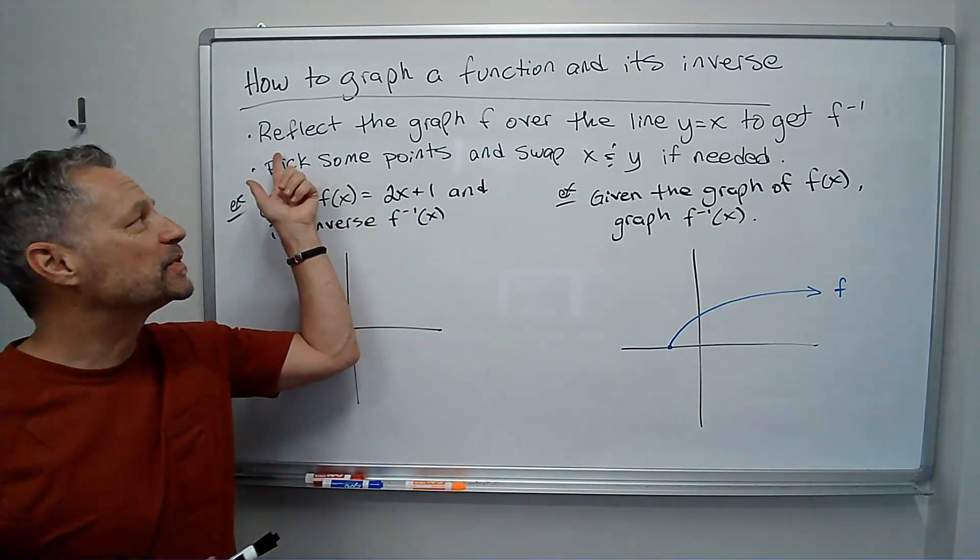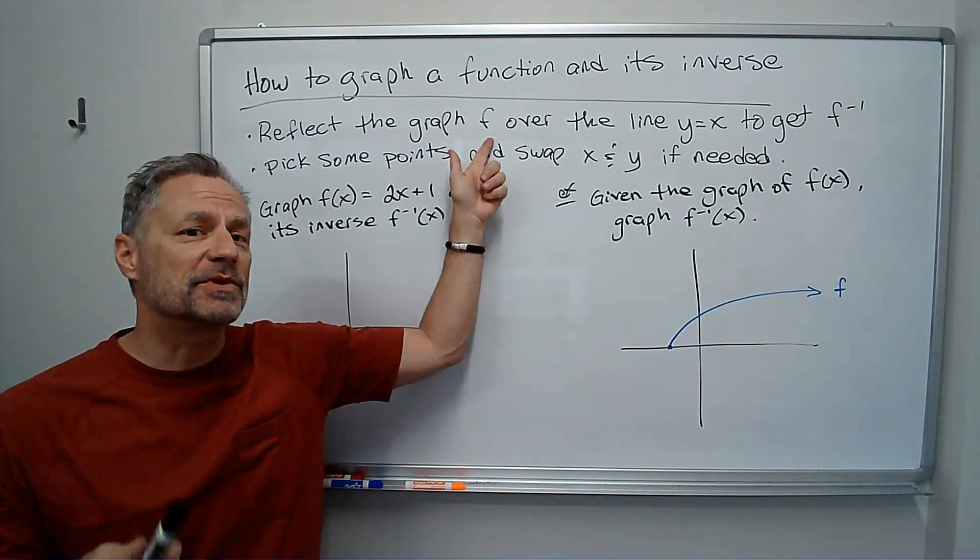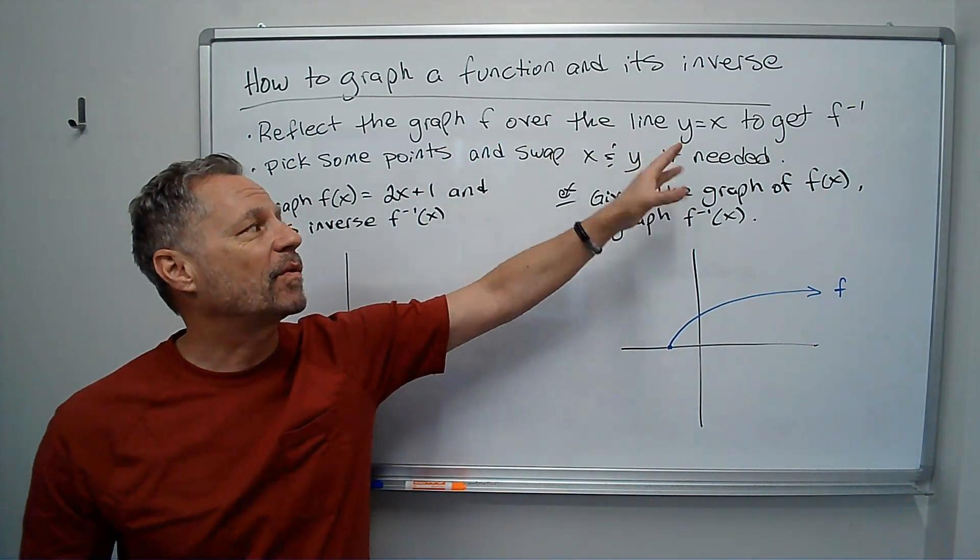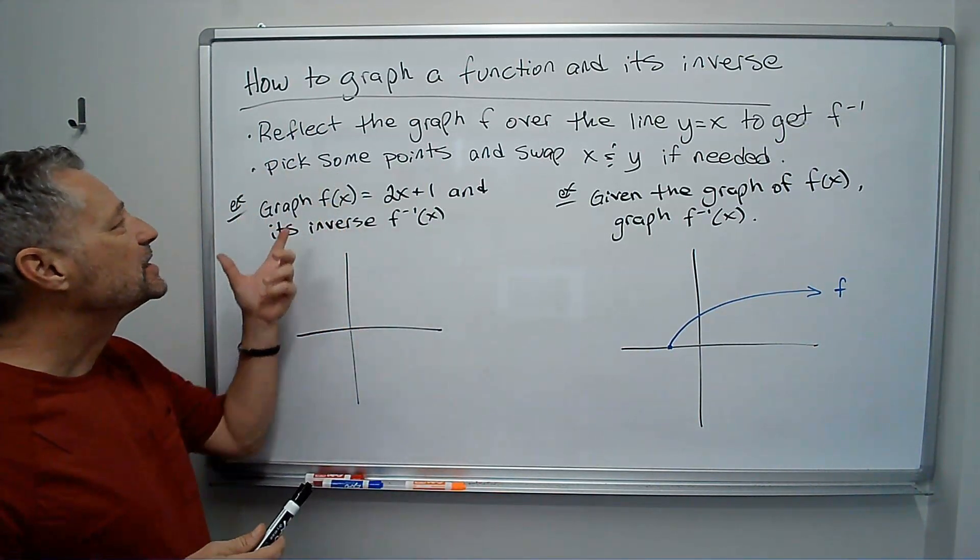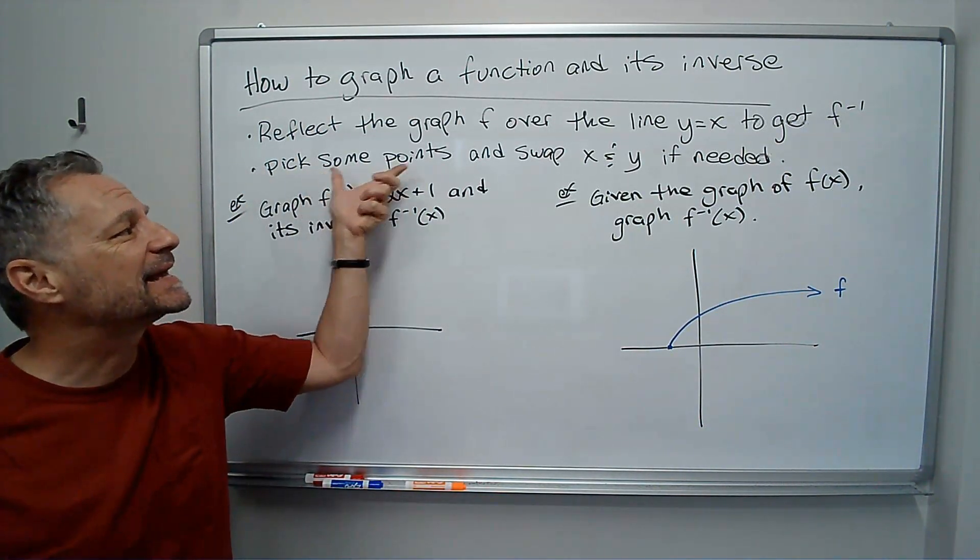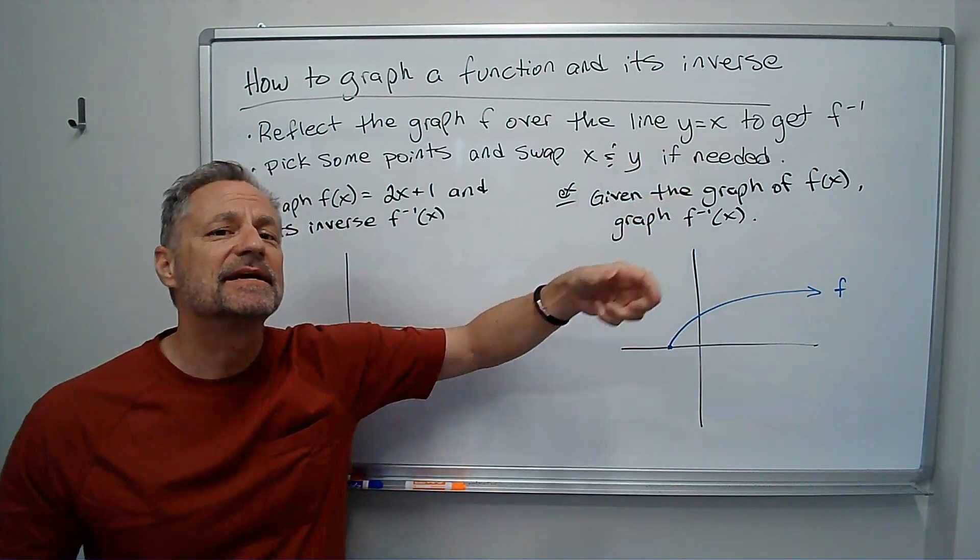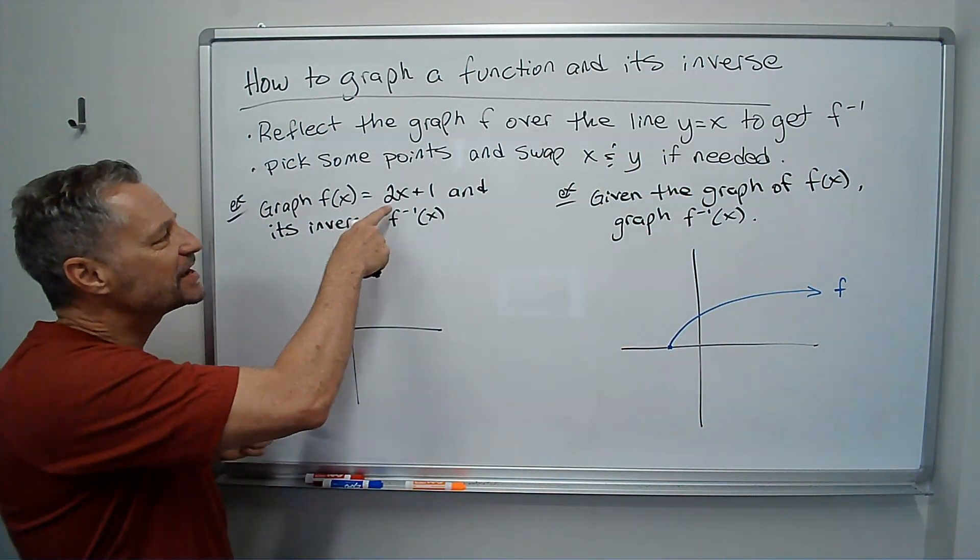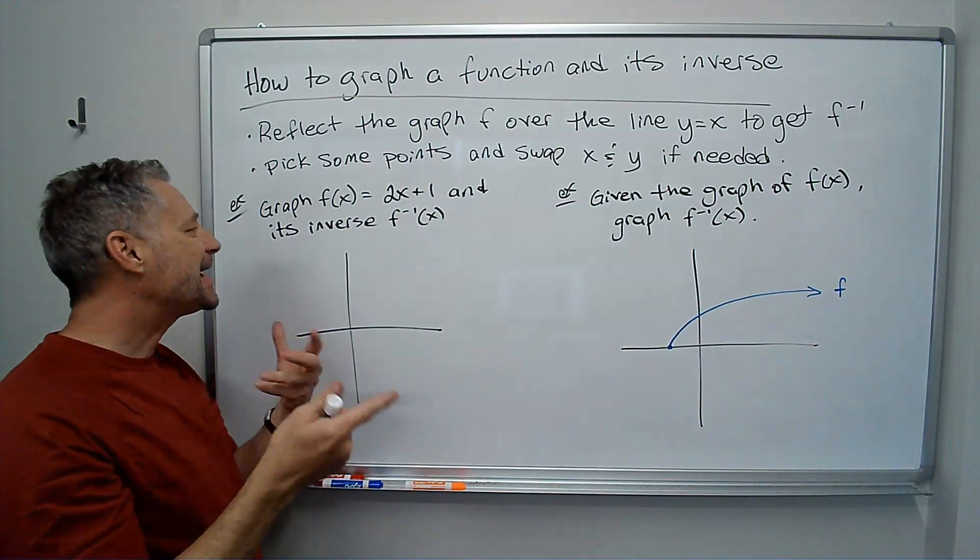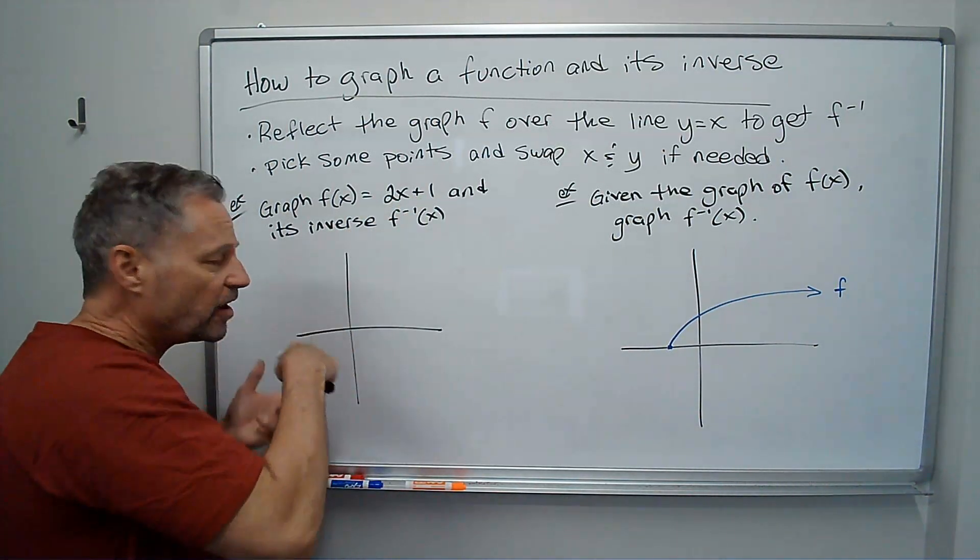The basic idea is we reflect the graph of f, the original function, over the line y equals x to get the inverse function f inverse. So pick some points and swap x and y if you need. Let's do some examples. Graph f of x equals 2x plus 1 and its inverse f inverse of x on the same axis.